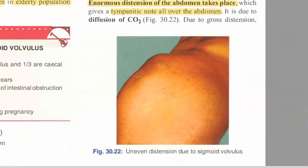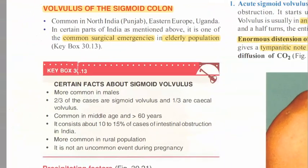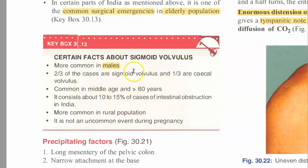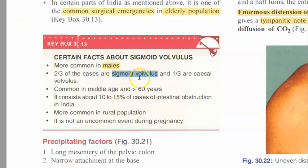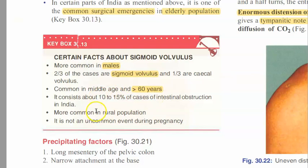Look at this uneven distension of the abdomen - this is how the patient will present. It's usually an elderly male, so that's what you should remember. This is a surgical emergency. Elderly population, especially male. You also have cecal volvulus, but in this video we are focusing on sigmoid volvulus. Above 60 years of age.